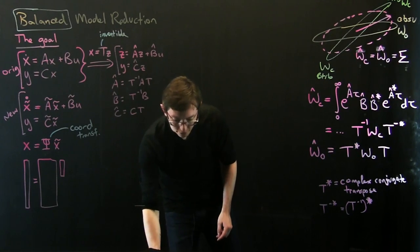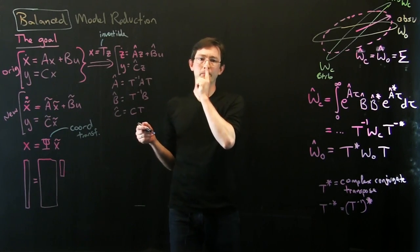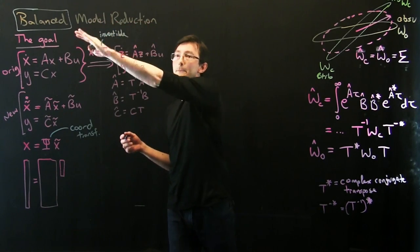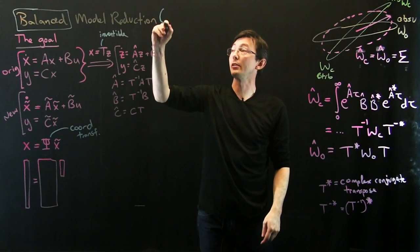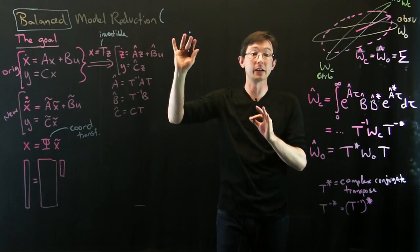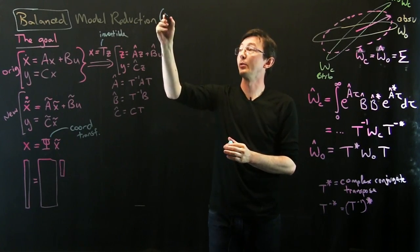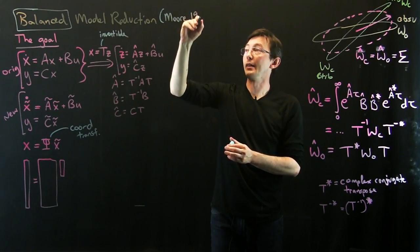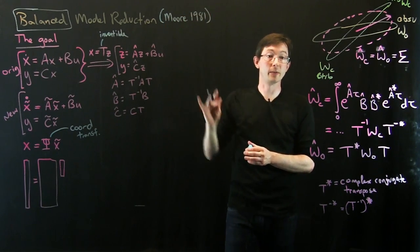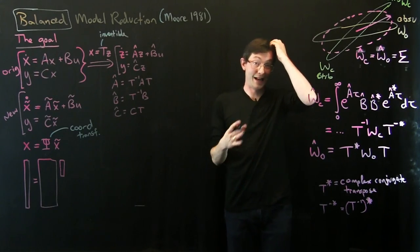So I want to work through a really simple example, and I should point out all of this balanced model reduction really started with this very important seminal paper by Moore in I think 1981. Very great paper. You should all go read it. It's a classic now.